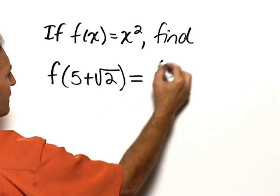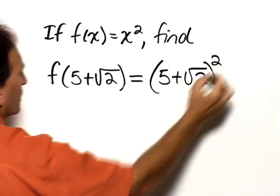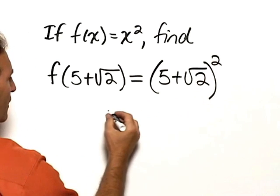and now write 5 plus the square root of 2 quantity squared. And simplifying that, we expand this binomial.